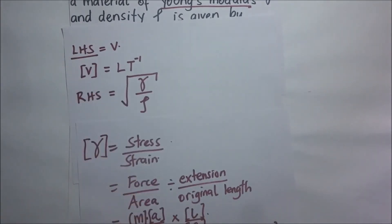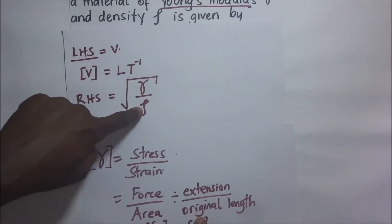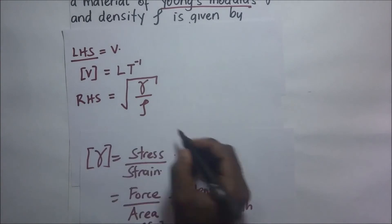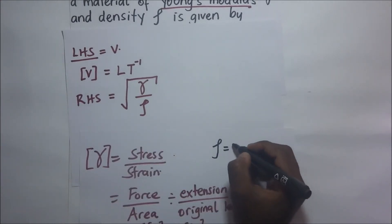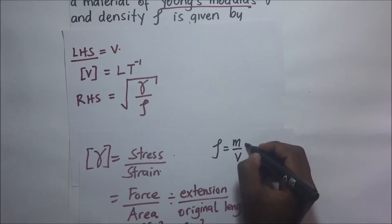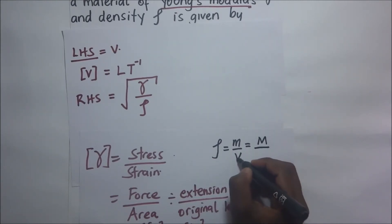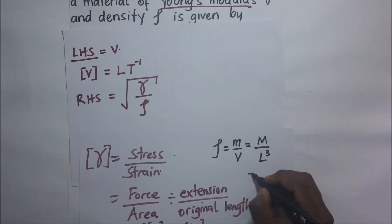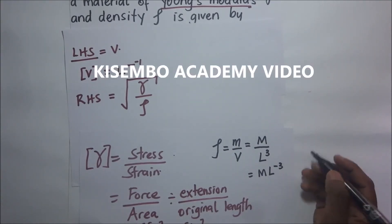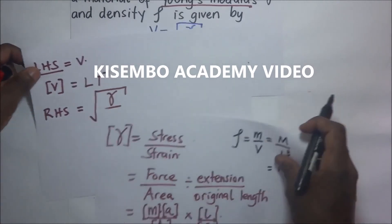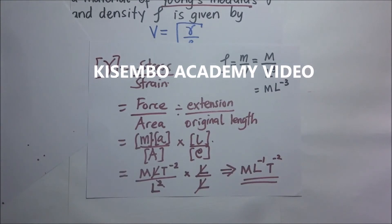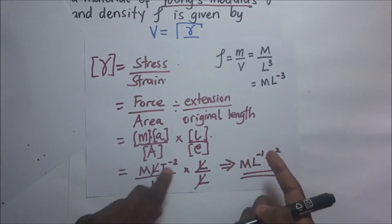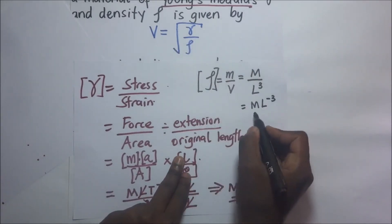Now that we have found the dimensions of Young's modulus, it's time to find the dimensions of density. We know that density is equal to mass over volume. Mass is capital M, and volume is length times width times height, which is L to the power 3. So the dimensions of density become M L to the power negative 3.